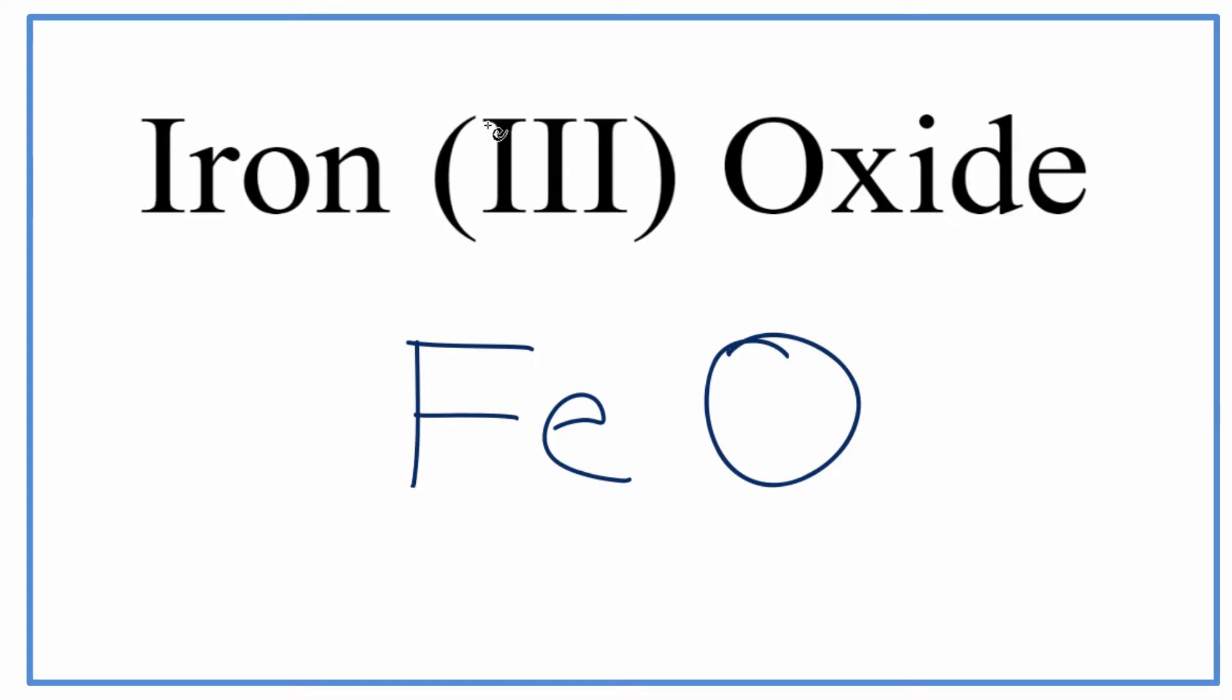We can look up here and we see this Roman numeral 3 in parentheses. That tells us that the charge on the iron is going to be plus 3.